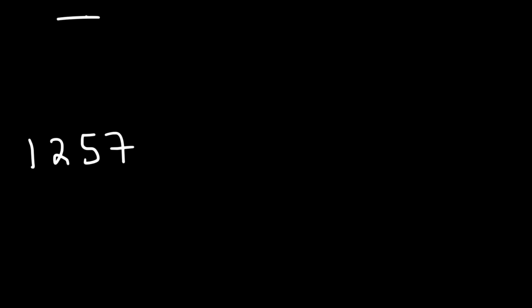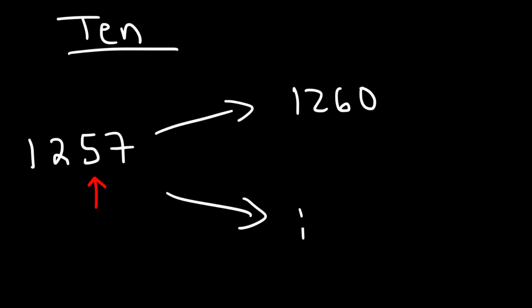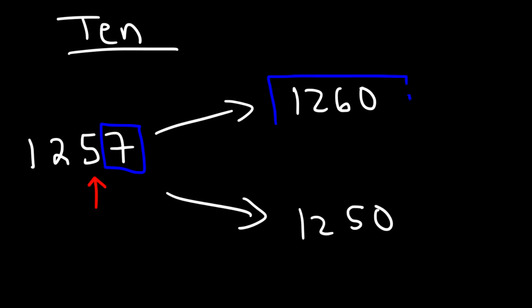Let's try one more example. Round this number to the nearest ten. So this is the tens place — we're either going to keep it a five or six, and this we need to make a zero. So it's either going to be 1,260 or 1,250. We need to look at the next number: seven is greater than five, so this is in the category of five or more, and we need to round up to 1,260. That's how you can round to the nearest ten.